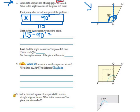So, when I do 115 minus 90, that gives me 25 degrees. So, the measure of angle MNQ is 25 degrees. And another way of saying that, the angle measure of the piece left over is 25 degrees.